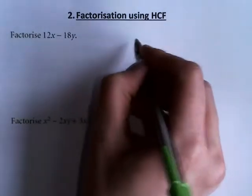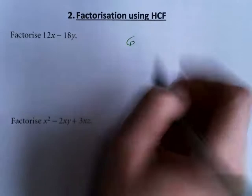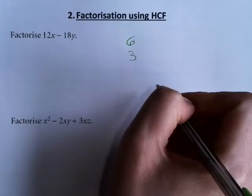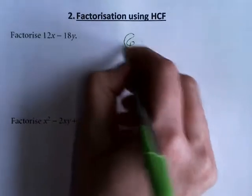Now 12 and 18, they have 6 as a common factor, they have 3 as a common factor. But because we are factorizing by using the highest common factor, we are going to go with the 6.